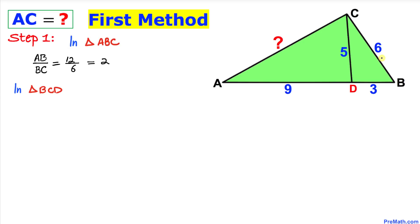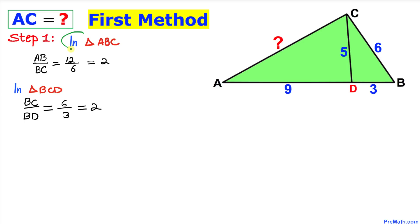Now we focus on triangle BCD and the side lengths BC and BD. The ratio BC divided by BD can be written as 6 divided by 3, which also gives us 2. As we can see, in both triangles ABC and BCD, their ratio is the same.